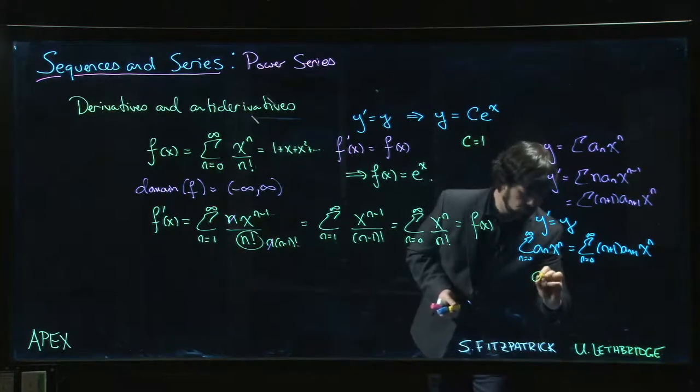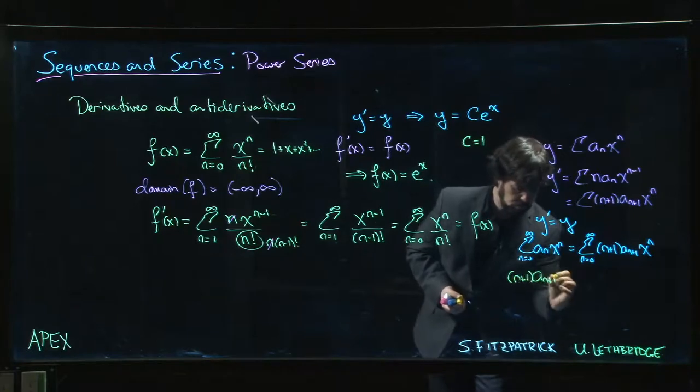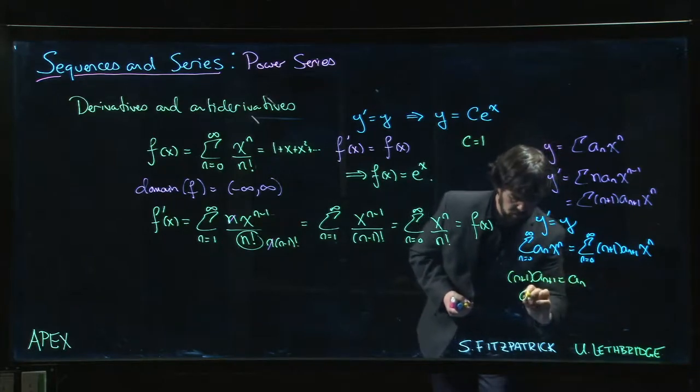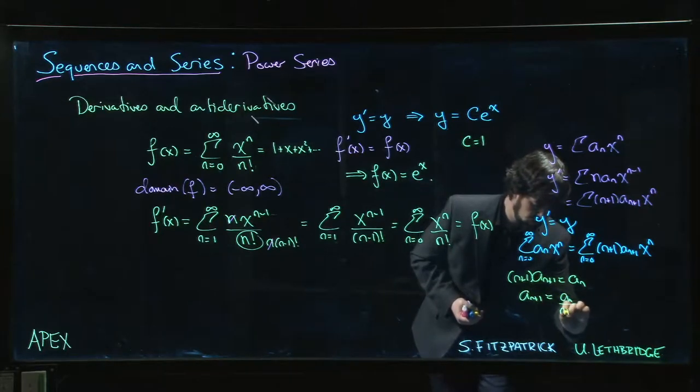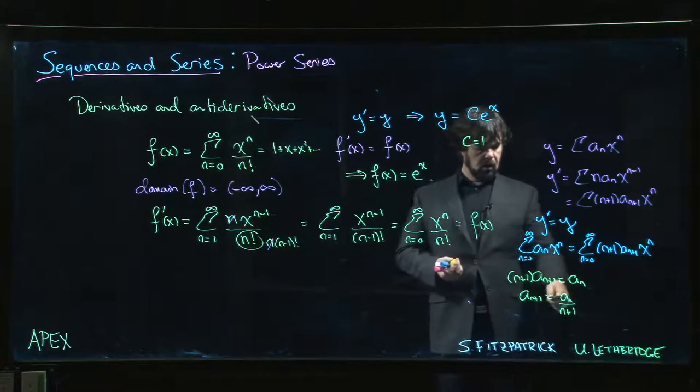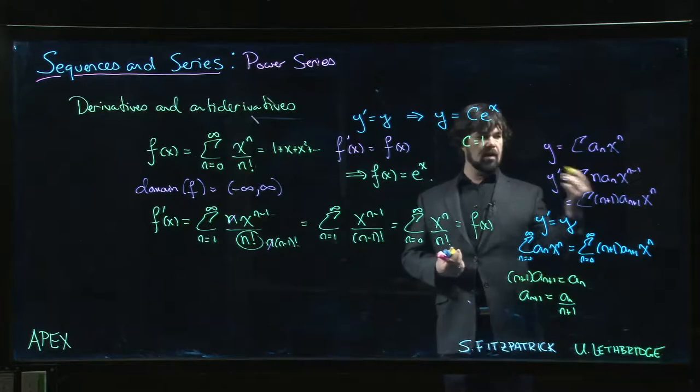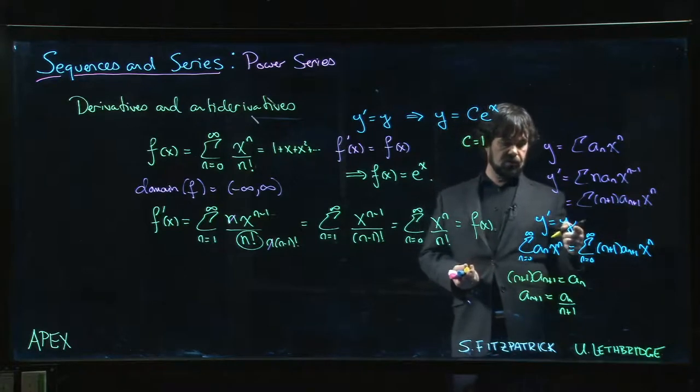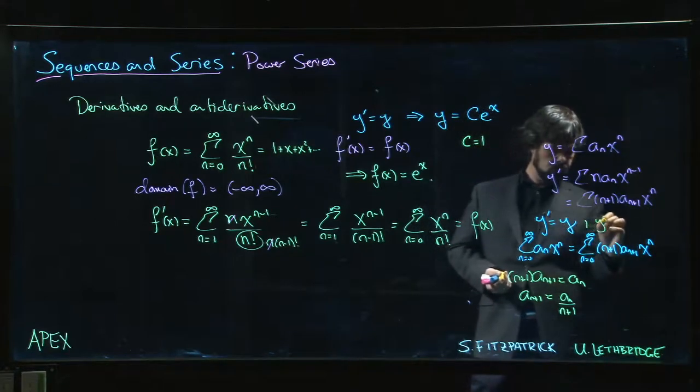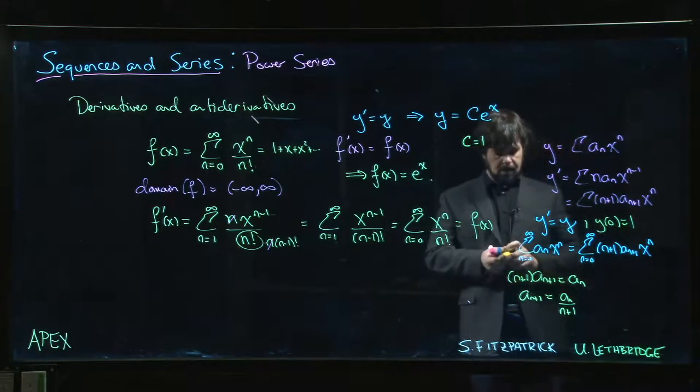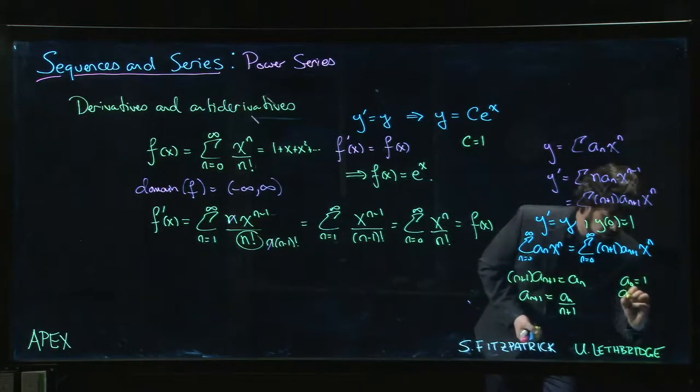So you can make this conclusion: a_(n+1)·(n+1) = a_n. So this gives you a recursion formula: a_(n+1) = a_n/(n+1). All you need is an initial condition—what's a_0? That initial value a_0 is the value of y at 0. If somebody says y(0) = 1, then what happens?